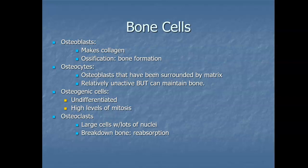Most osteoblasts are found in the growing portions of the bone, such as the periosteum and endosteum. These cells do not divide; instead, they make and secrete collagen matrix and the salts we just talked about. The matrix that the osteoblasts produce surrounds the osteoblast — it becomes trapped in that webbing of fibers — and as a result, it becomes an osteocyte.